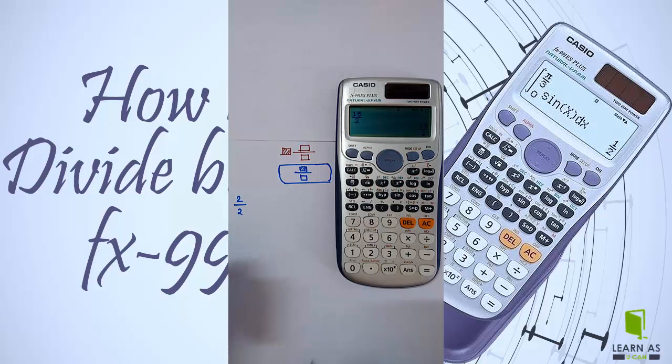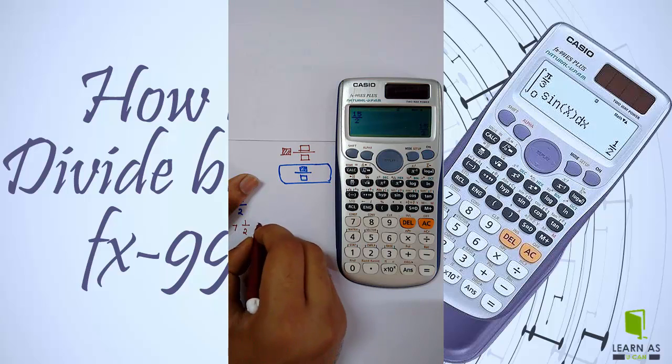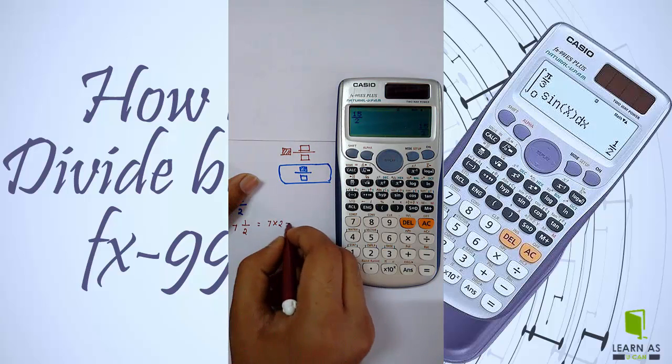Suppose I have to use 7 raise to 1 by 2 (7^(1/2)), which is nothing but square root of 7. How to calculate this? Just press shift.